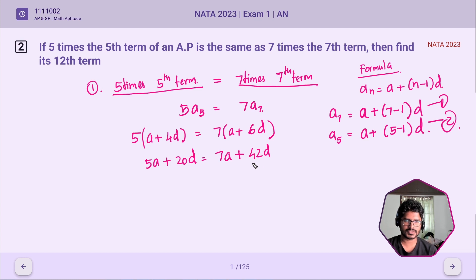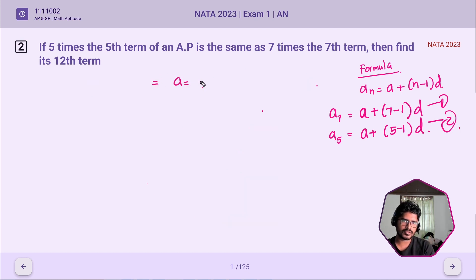We can further simplify this to 2A = -22D. So A = -11D. We got A = -11D from the given data.